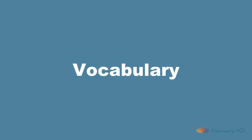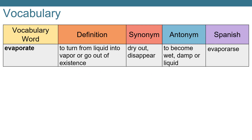Before we begin, let's go over some important vocabulary that will help us better understand this passage. Our first term is evaporate. Evaporate means to turn from liquid into vapor or go out of existence. A synonym, or word that means the same, could be dry out or disappear. And an antonym, or opposite, would be to become wet, damp, or liquid.